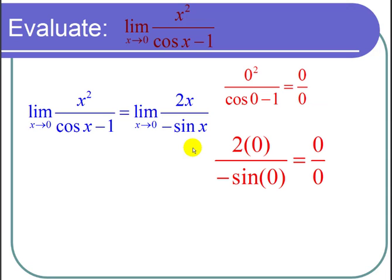Now let's plug in again. When we plug in x equals 0, 2 times 0 is 0, and negative sine of 0 is 0 again, so once again we have 0 over 0.